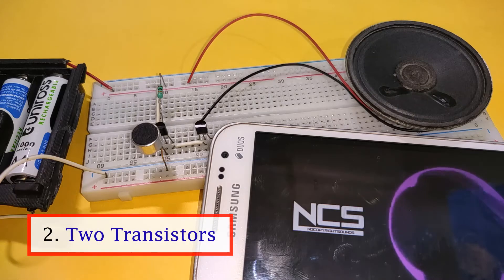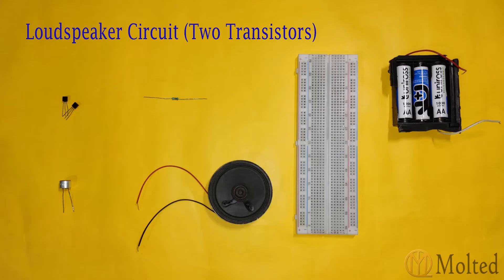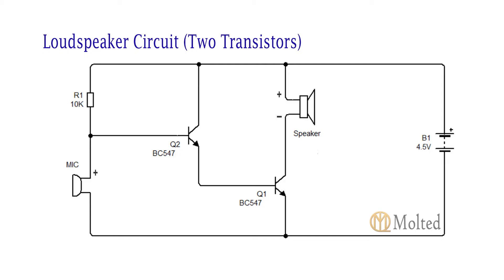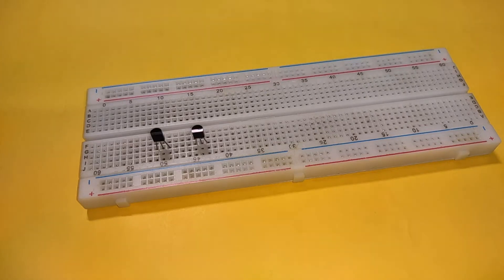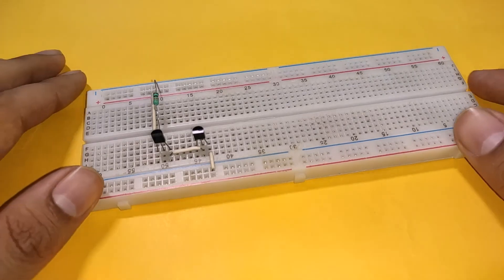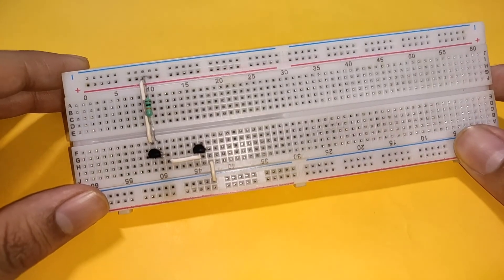The next circuit is by using two transistors. These are the required components. And this is the circuit diagram. Place two BC-517 transistors with the emitter of the first transistor connected to the base of the second transistor. Connect the emitter of the second transistor to the negative rail and the collector of the first transistor to the positive rail. Then connect a 10K resistor between the base of the first transistor and the positive power supply.